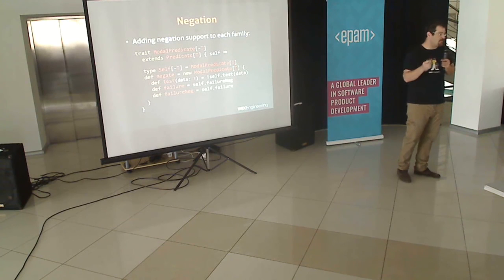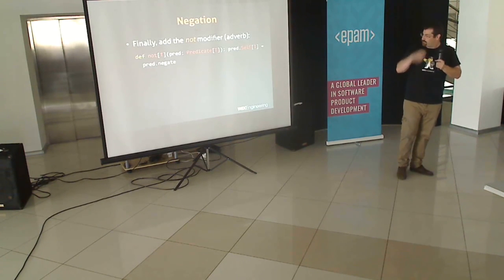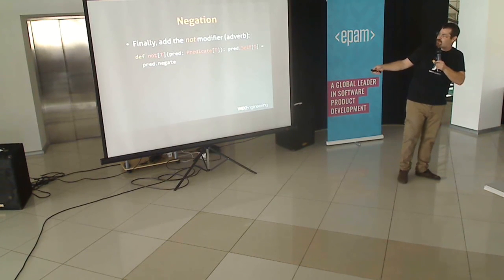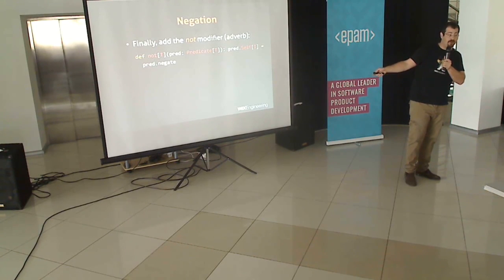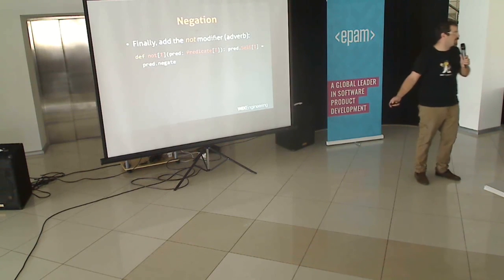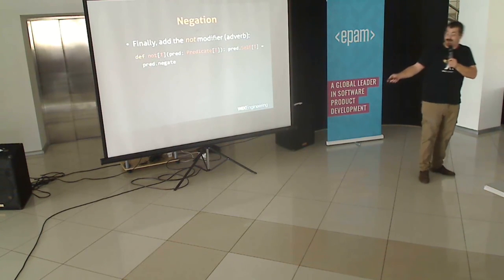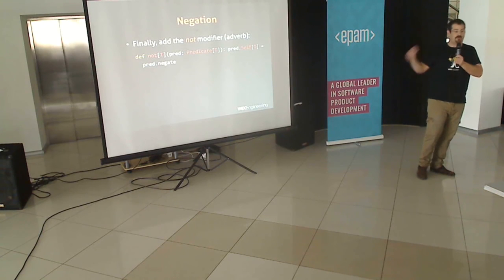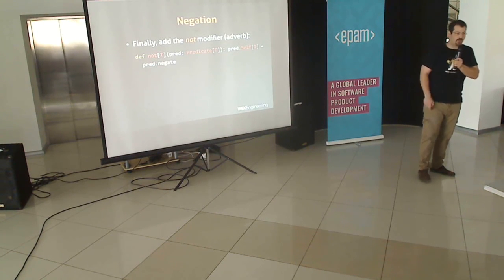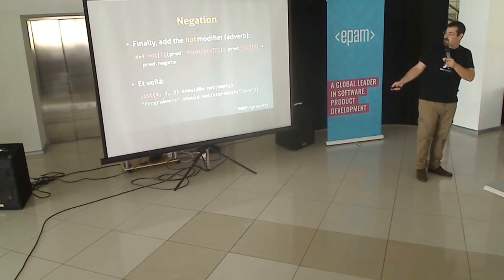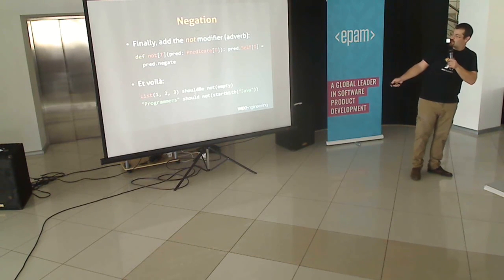Finally, we add the 'not' modifier — which is an adverb. We have function 'not' operating over some type T, taking in a Predicate of T, and using dependent method types to return the self-type of the predicate. So if it's modal, it returns modal; if it's compound, it returns compound. And it just calls 'negate.' This is part of our DSL now. Once we have those parts in place — voilà: 'List(1, 2, 3) should be not empty,' 'programmers should not startWith Java.'